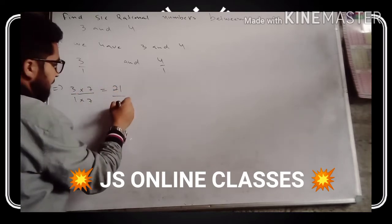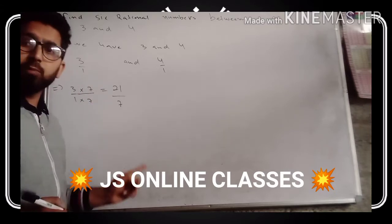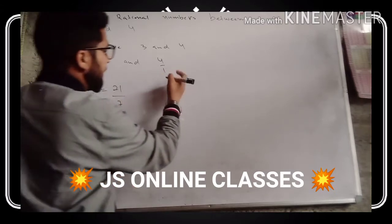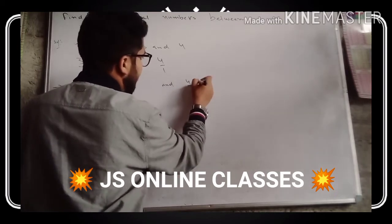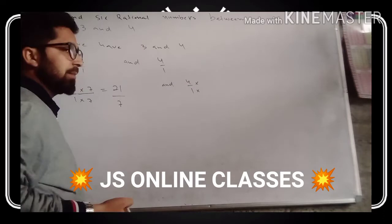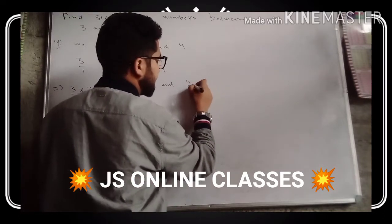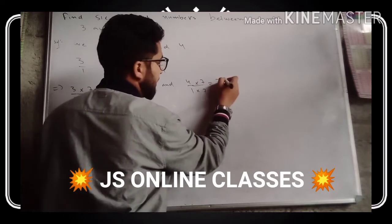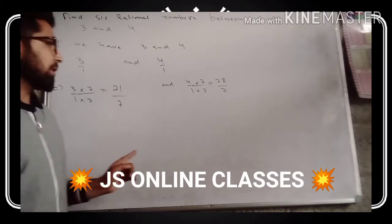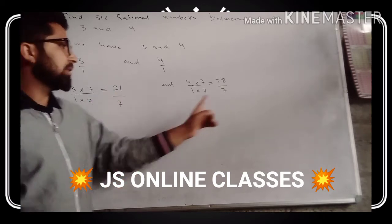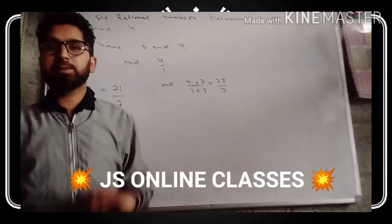We multiplied three divided by one by seven on both sides. Similarly, we multiply four divided by one by seven on both sides, giving us twenty-eight divided by seven. So we now have two boundary values: twenty-one by seven and twenty-eight by seven. Between these two rational numbers we need to find six rational numbers.